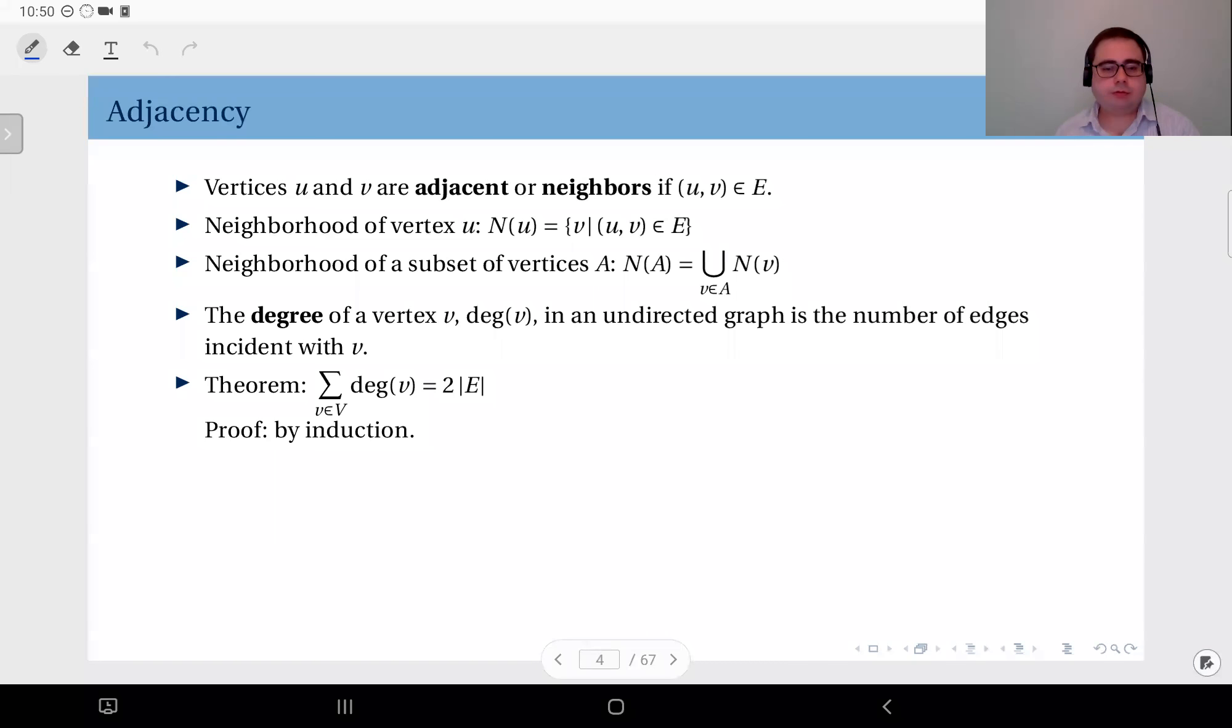Based on this we define the neighborhood of a vertex N(u) as the set of vertices v such that u and v are neighbors. In a similar way we can define the neighborhood of a subset of vertices A, N(A), as the union of the neighborhoods of each of the vertices in this subset A.